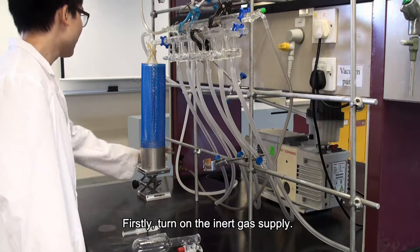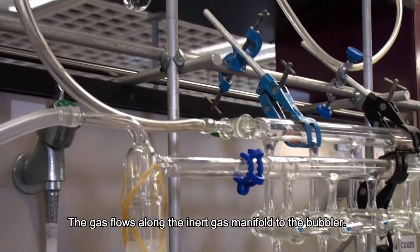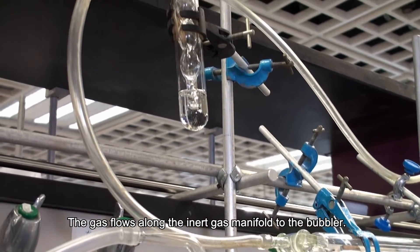Firstly, turn on the inert gas supply. The gas flows along the inert gas manifold to the bubbler.